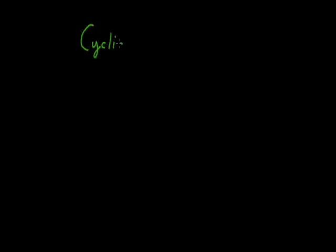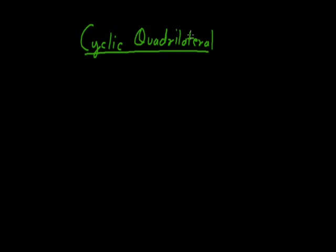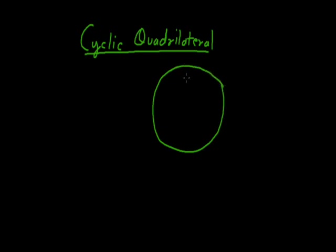Hello students, myself Ashish Shawla and today we discuss about cyclic quadrilateral. First of all we understand what we mean by cyclic quadrilateral. A quadrilateral whose all the vertices lie on the circumference of the circle, then the quadrilateral is said to be cyclic.